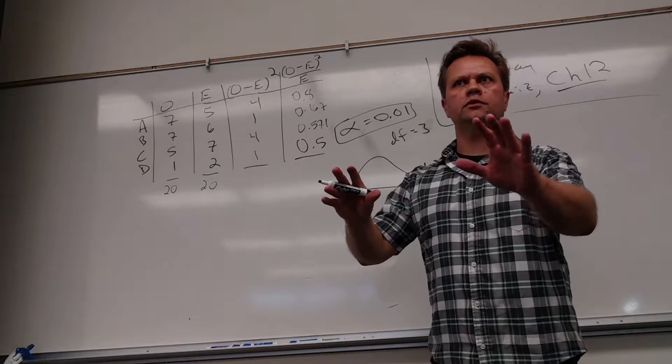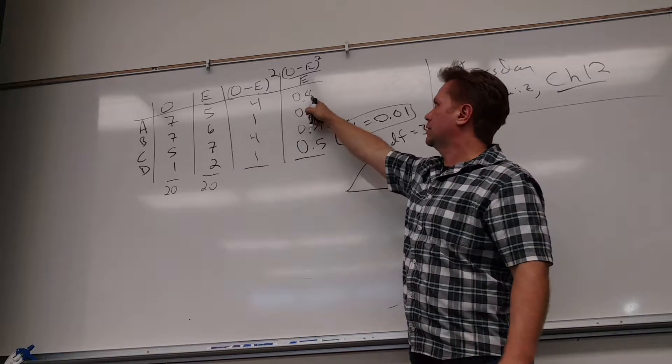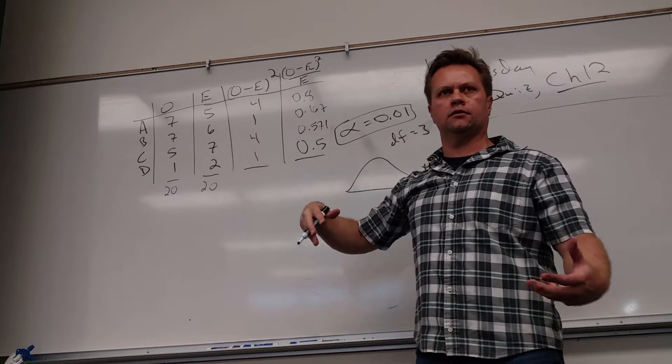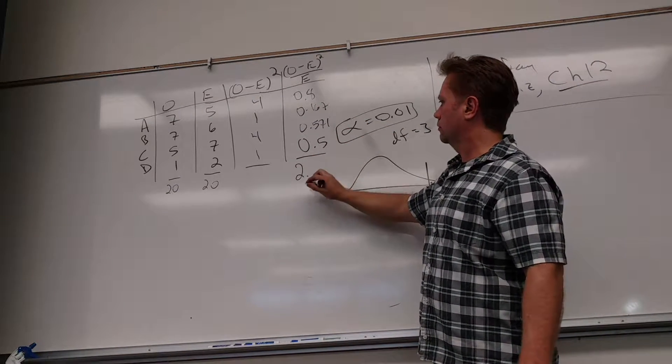Yeah, is everybody cool with those numbers there? Yeah. Everybody got these, right? They're just squaring the differences, and then you just got to take those divided by the expected. And then when you add these up, what are you getting? 2.380.